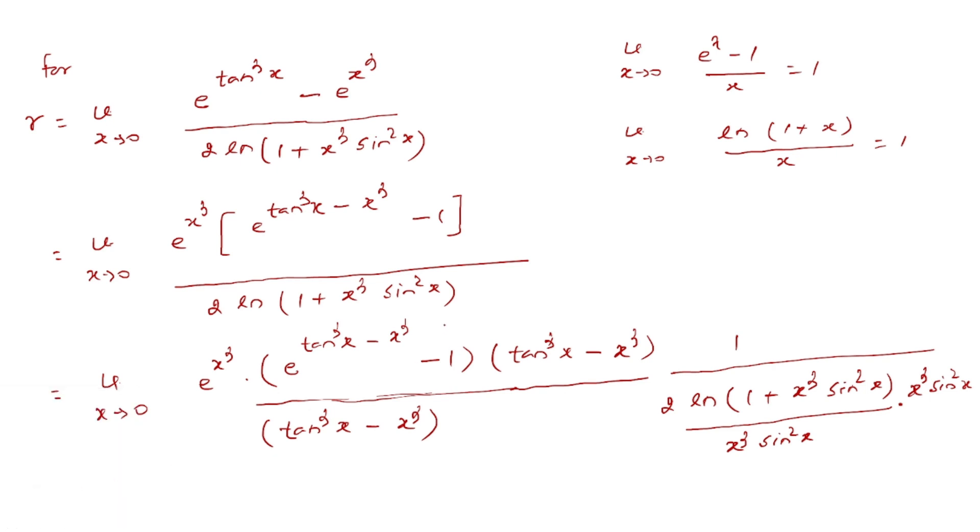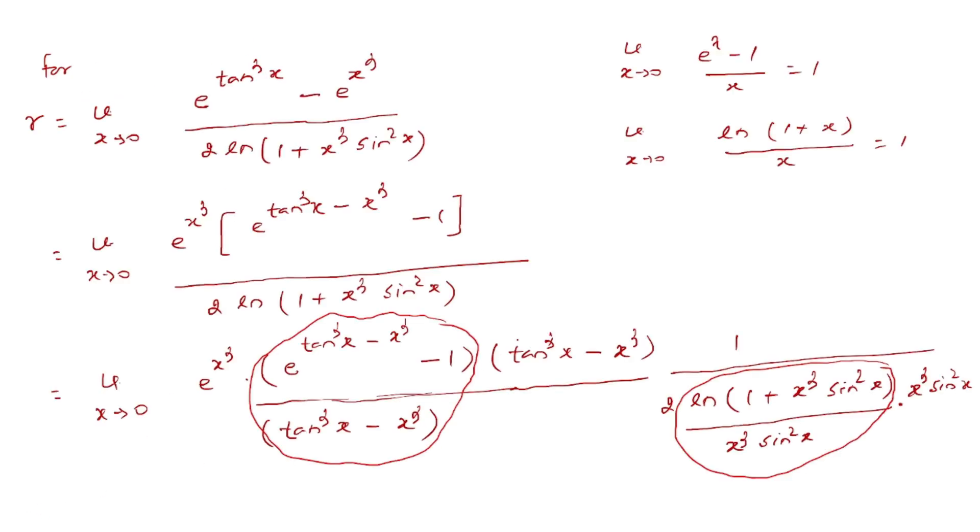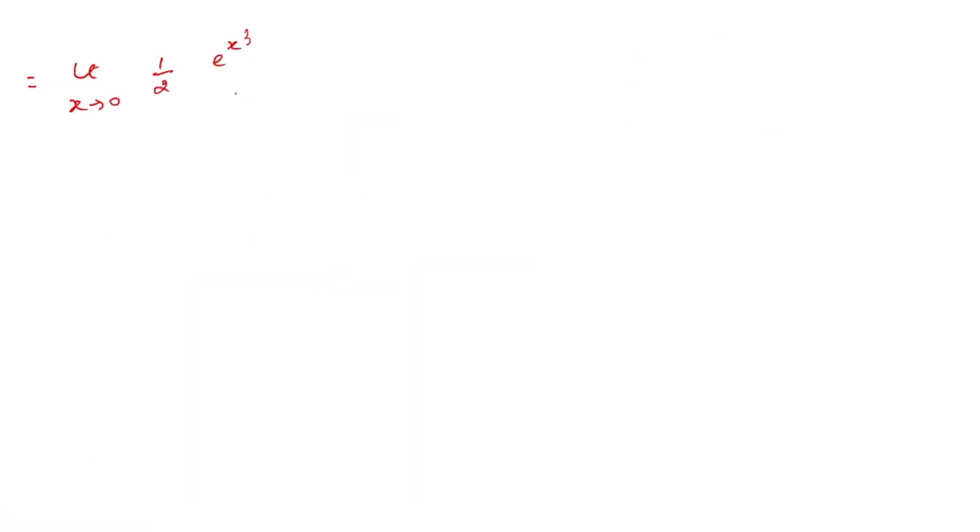These standard limits both equal 1 as x tends to 0. Overall, the remaining value is limit x tends to 0. We can factor using a³ - b³ as (a - b)(a² + ab + b²).